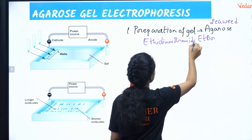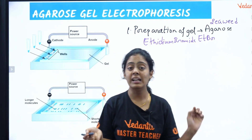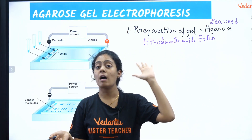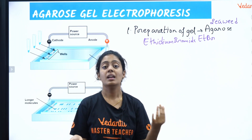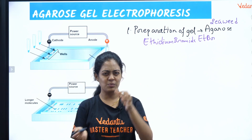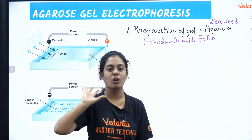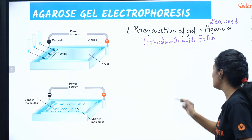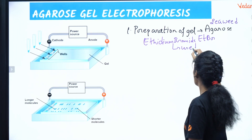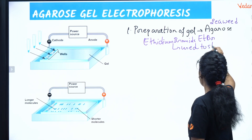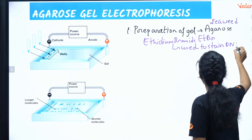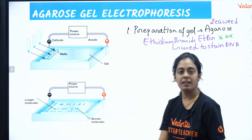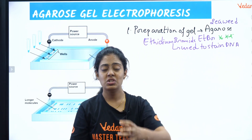I have actually done this experiment practically. Whenever you are using this technique, you have to wear gloves because ETBR is carcinogenic. Just add a few drops — milligram amount. This ETBR is the one which is used to stain my DNA. It is a very important question asked many times in your exams. Now the gel is prepared, so we go ahead and pour it.